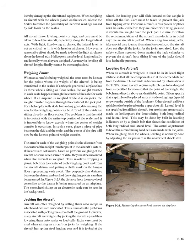All aircraft have leveling points or lugs; care must be taken to level the aircraft, especially along the longitudinal axis. With light fixed-wing airplanes, the lateral level is less critical, but a reasonable effort should be made. Helicopters must be level both longitudinally and laterally when weighed. Weighing Points: The arms must be known for the points where the weight of the aircraft is being transferred to the scales. For a tricycle-gear airplane with wheels on floor scales, weight transfer occurs through the center of each wheel axle; on jacks, through the center of the jack pad.